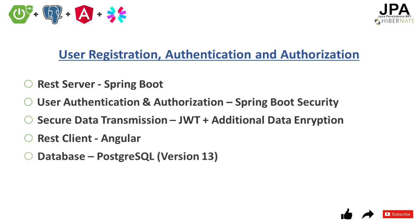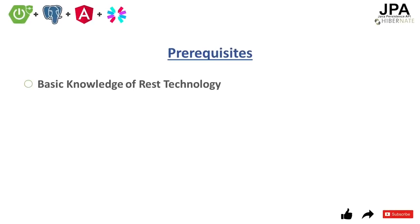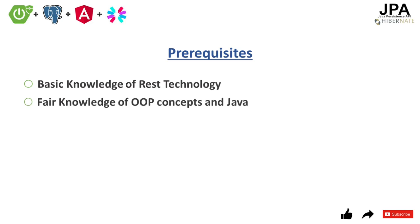I'm going to use PostgreSQL version 13 for this whole series. For development I will use Visual Studio Code and Postman as a REST client until we build our own in Angular. Now, for prerequisites: first, you should have basic knowledge of REST technology — not implementation, but the theoretical knowledge of basic REST architecture. Second, we are going to use concepts of object-oriented programming, so having a fair knowledge of OOP will help you understand and implement the concepts of this series.